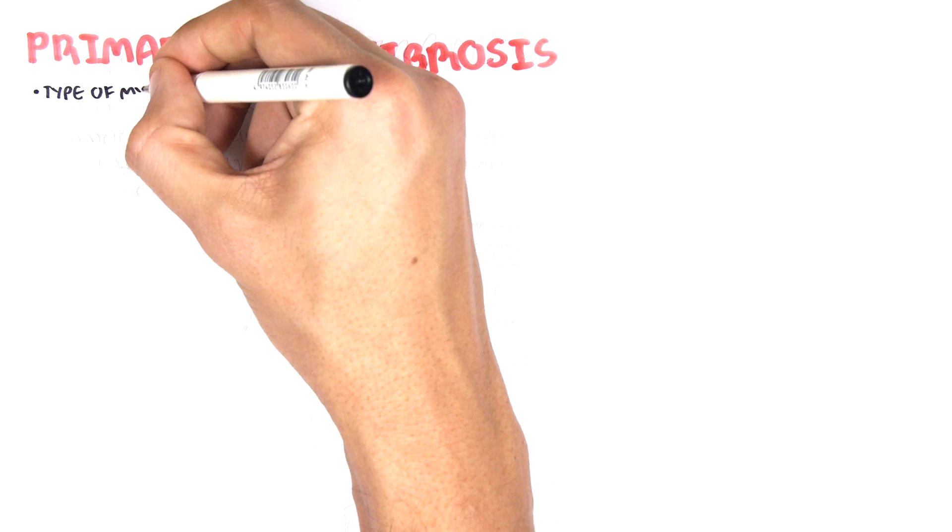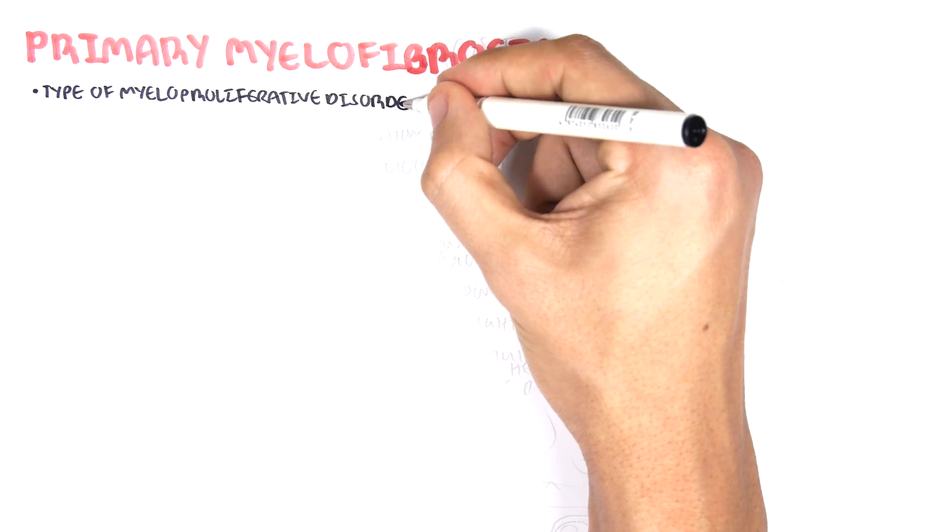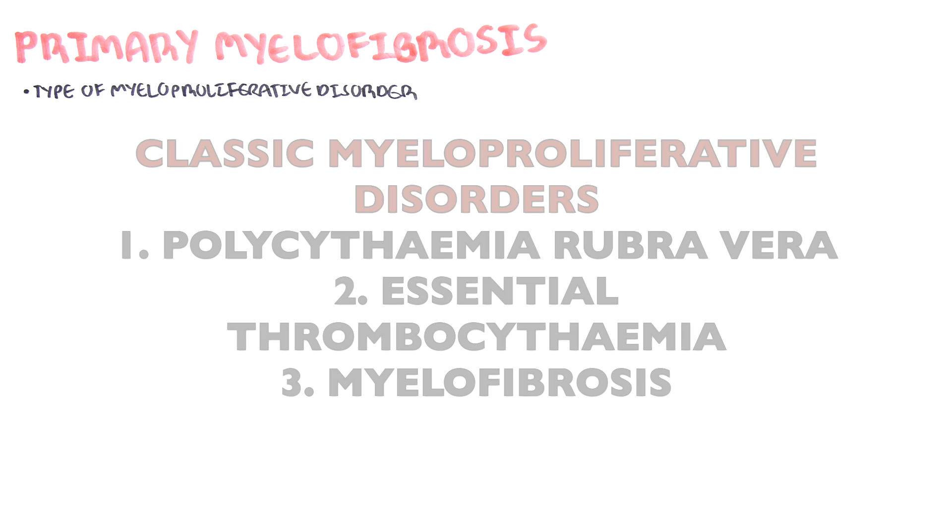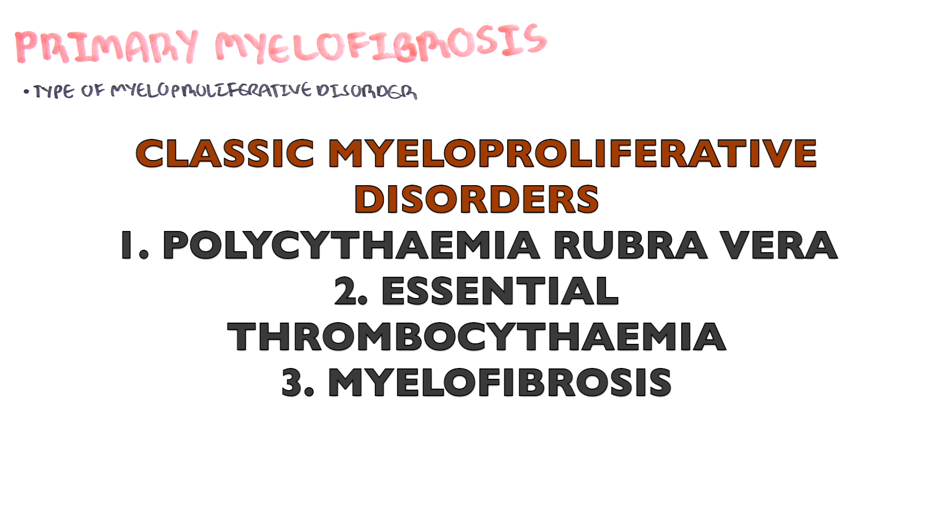Primary myelofibrosis is a type of myeloproliferative disorder. Remember that there are three classic myeloproliferative disorders, and these include polycythemia rubra vera, essential thrombocythemia, and primary myelofibrosis.